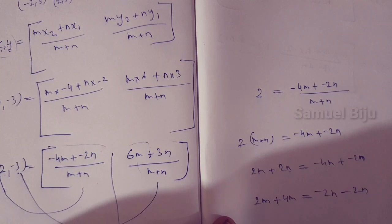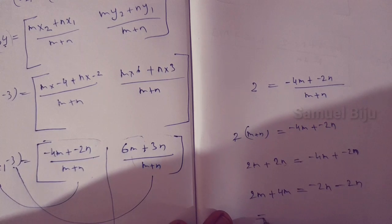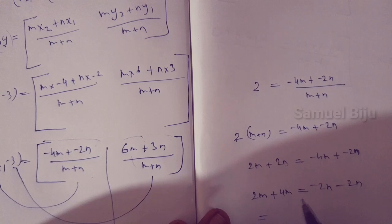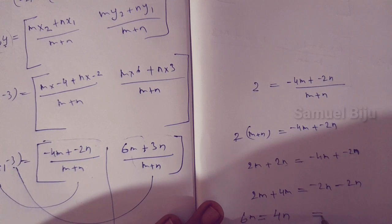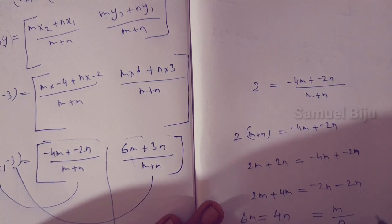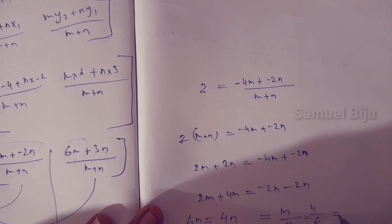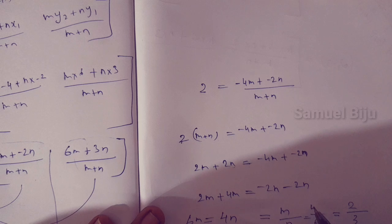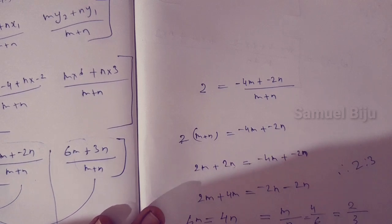Solving further, we get 6m on the left-hand side and 4n on the right-hand side. So m divided by n equals 4 divided by 6, which simplifies to 2 by 3. Therefore the ratio m to n equals 2 to 3.